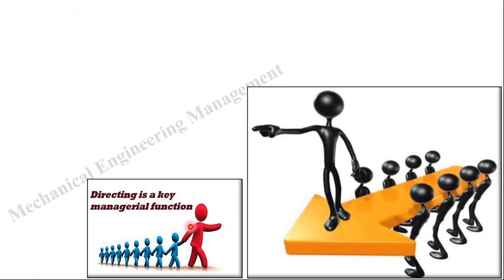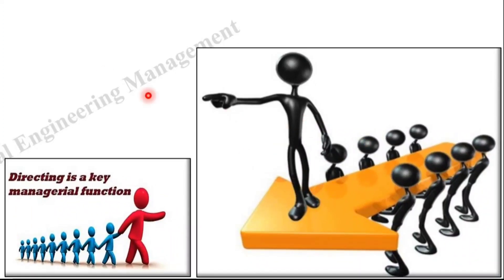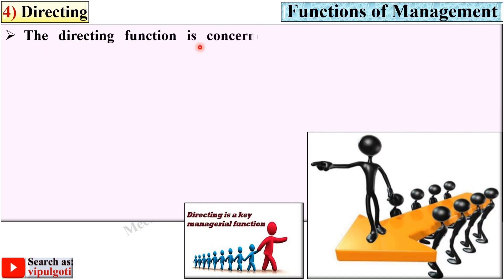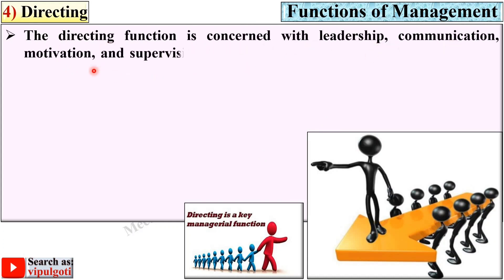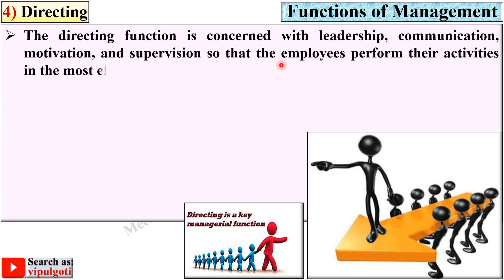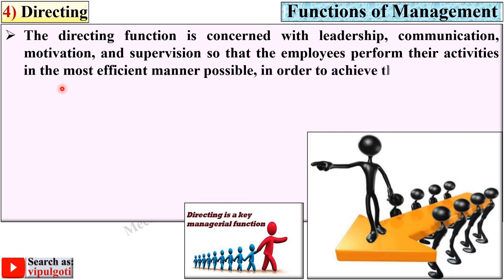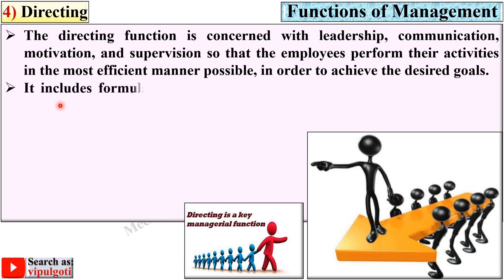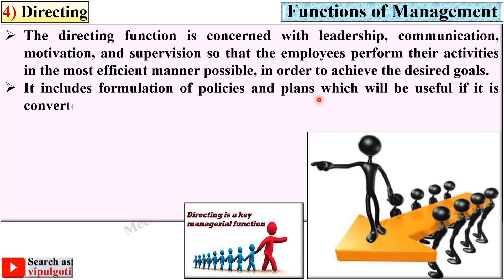Next is directing. From the figure you can understand it gives direction. The directing function is concerned with leadership, communication, motivation, and supervision so that employees perform their activities in the most efficient manner in order to achieve the desired goals. In short, directing is the management function where management gives direction to employees to perform efficiently and achieve the organization's desired goals. It includes formulation of policies and plans which are useful when converted into action.